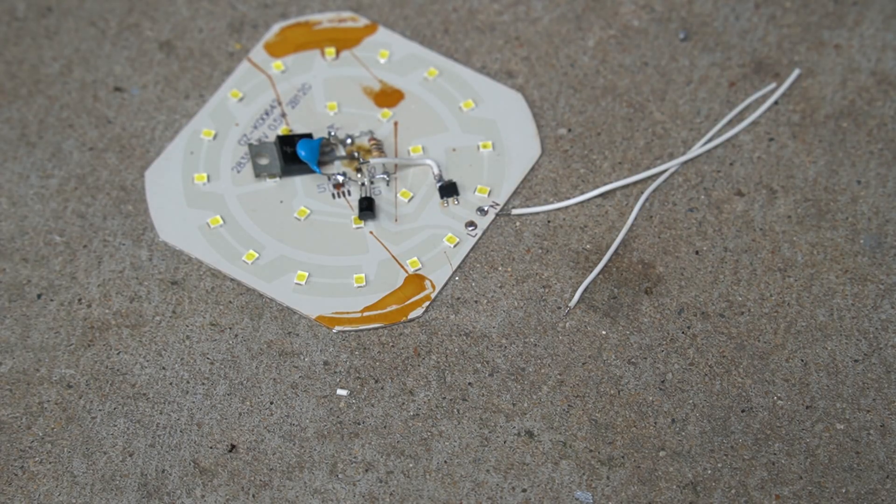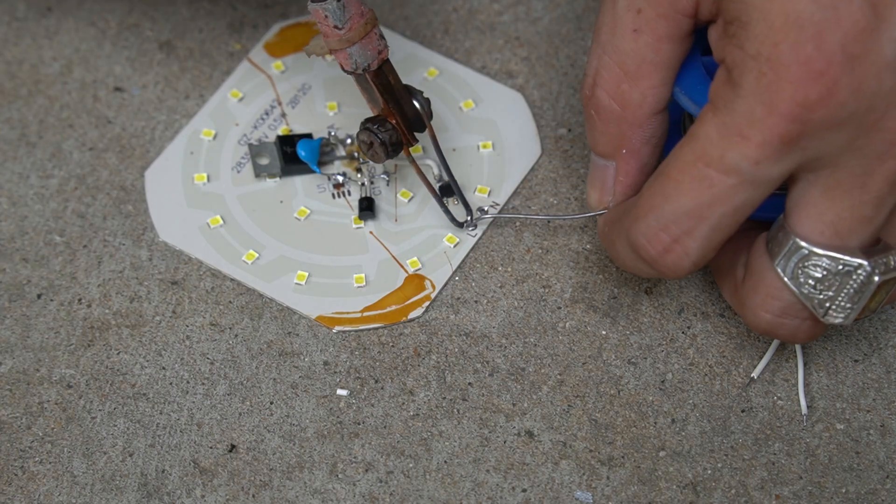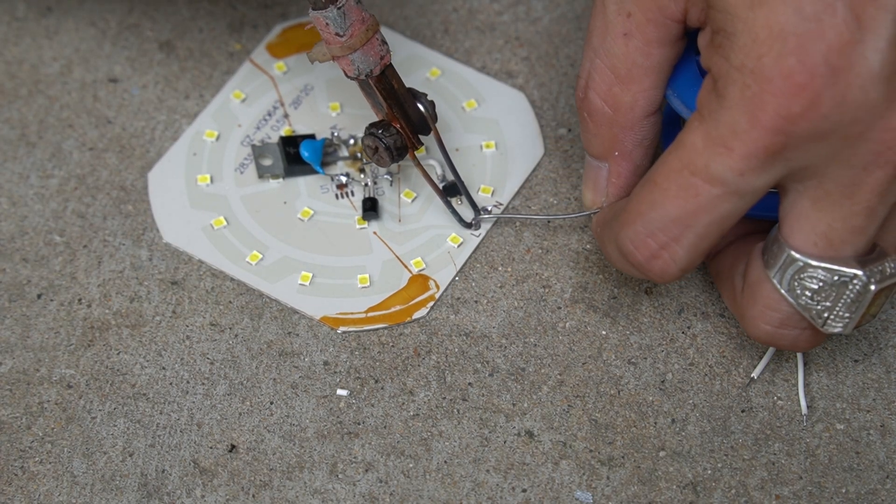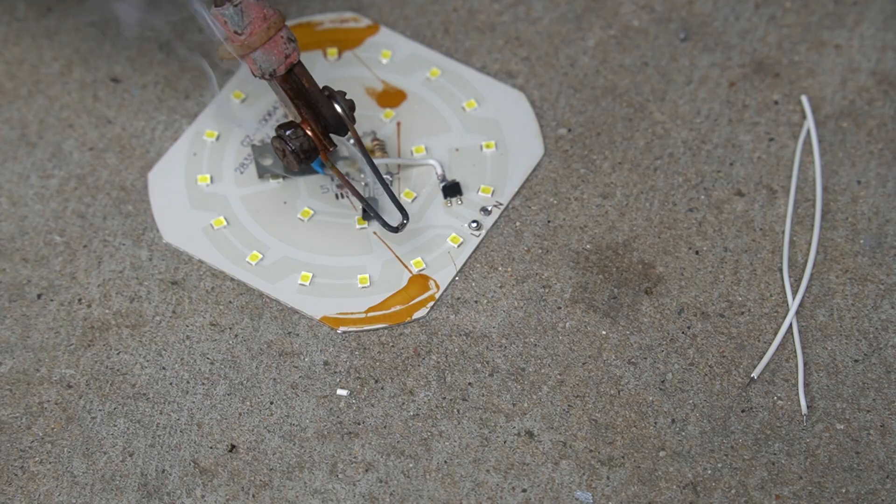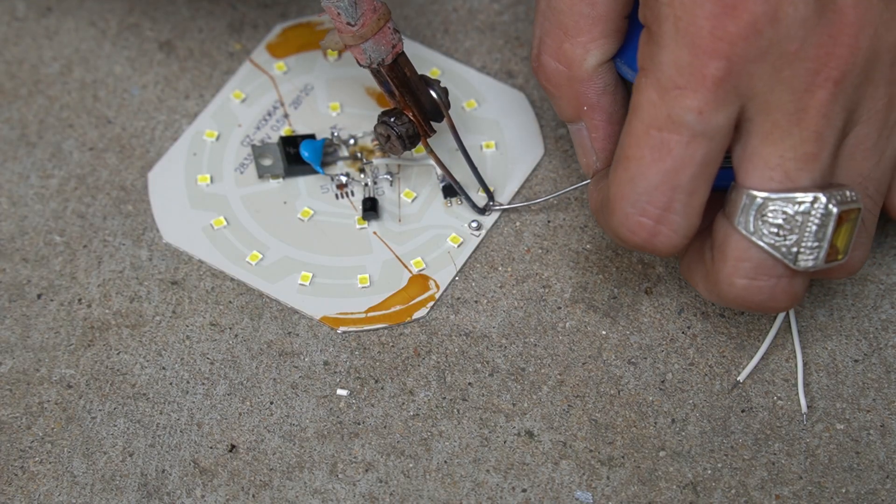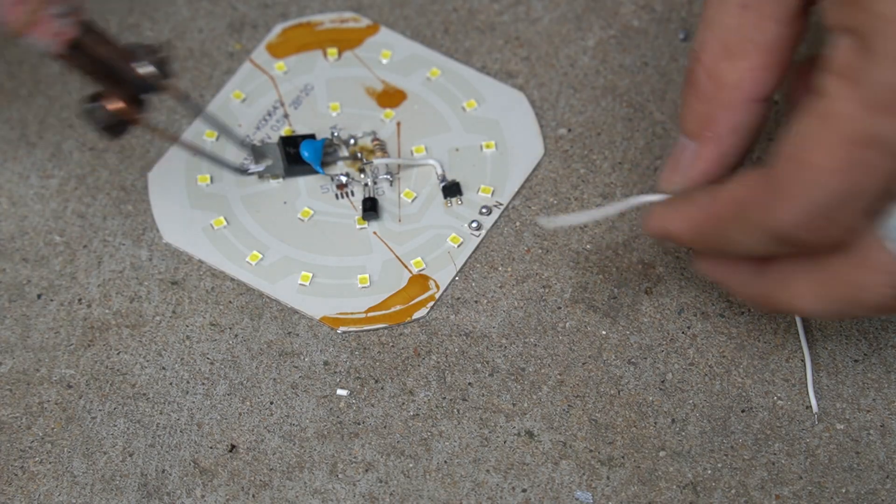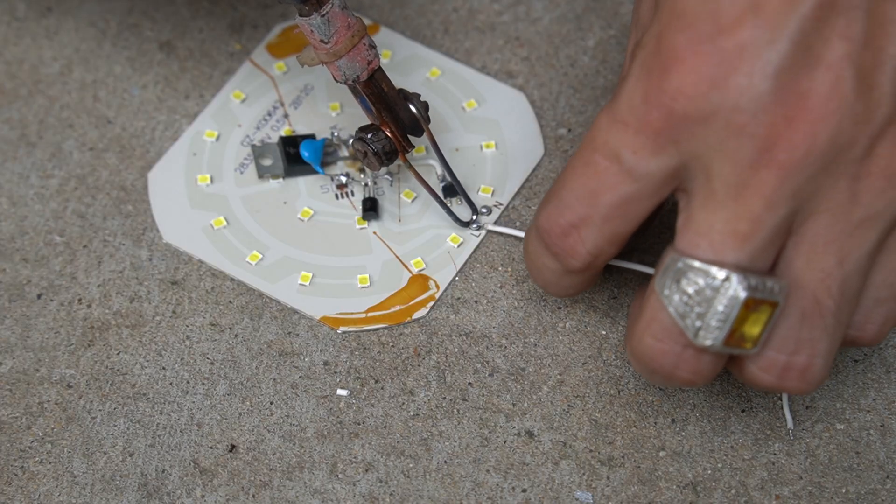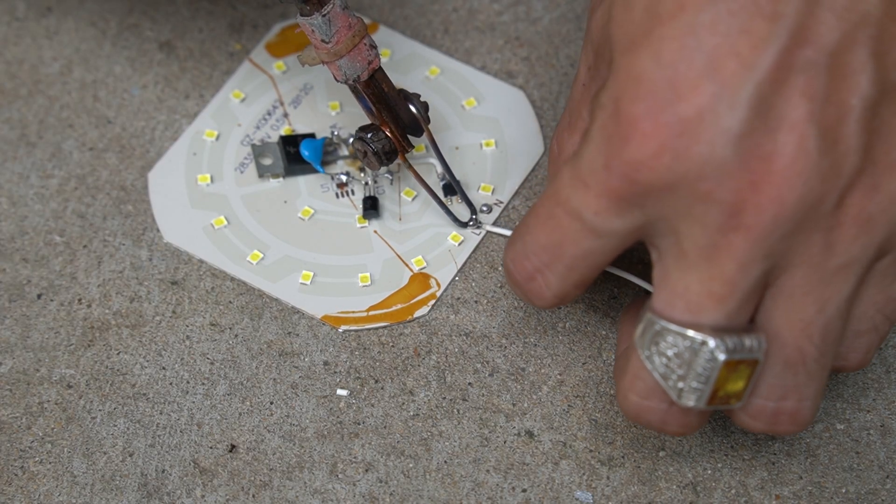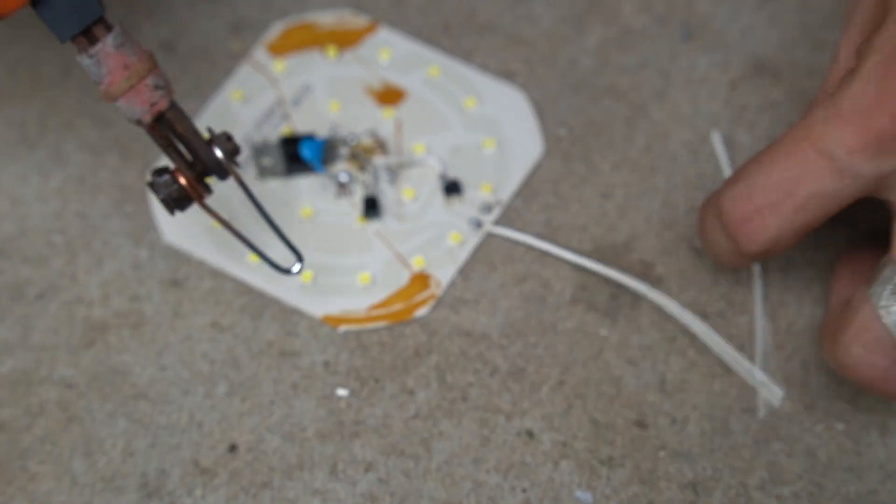I soldered one end to the MOSFET leg, two wires to the input of the LED bar.